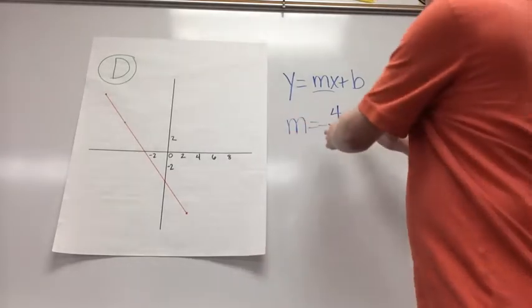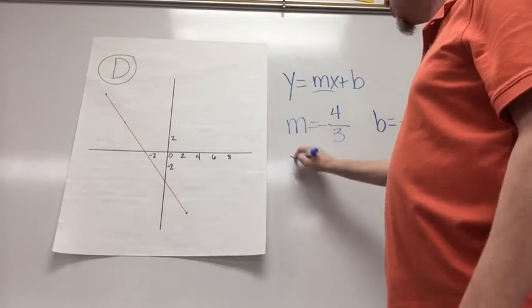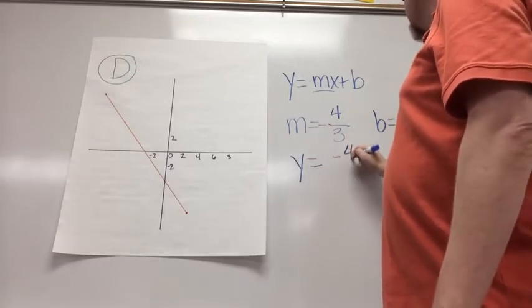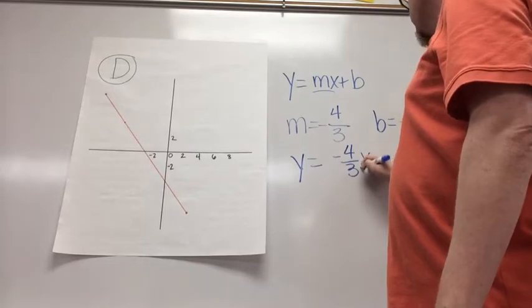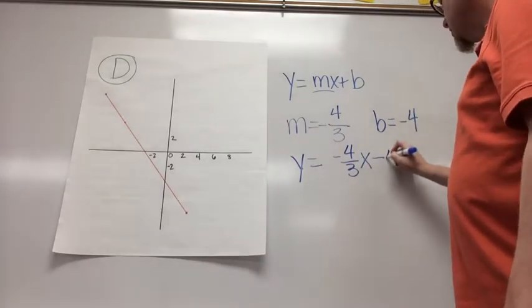So now my equation, I just plug in m and plug in b, and so the equation of this line is y equals negative 4 thirds x minus 4.